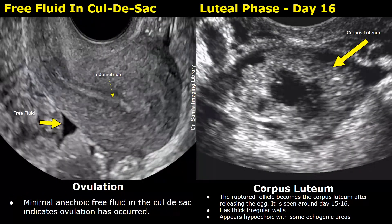A small amount of free fluid in the pouch of Douglas, or the cul-de-sac, is also a sonographic sign of ovulation — you will find a small anechoic fluid collection behind the uterus. The image on the right shows a corpus luteum on day sixteen with thick, irregular, echogenic walls and a hypoechoic center.